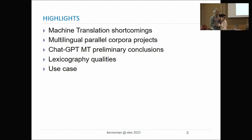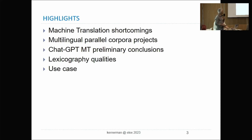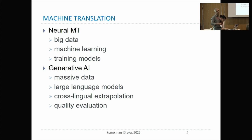The highlights I'll go through: the main problems with machine translation, some big projects in 2022 regarding multilingual corpora, how ChatGPT helps today, and a bit on the qualities of lexicography. Until very recently, the main thing in machine translation has been neural machine translation, basically based on big data used for training machine learning models. That was the base of the abstract I submitted.